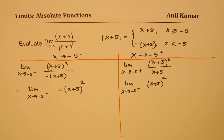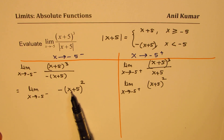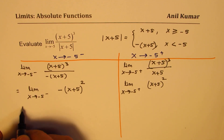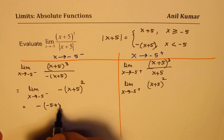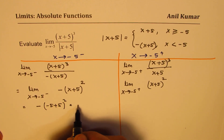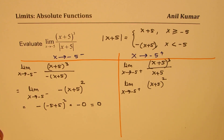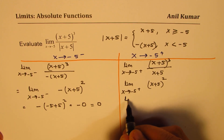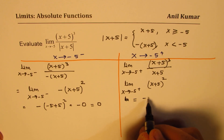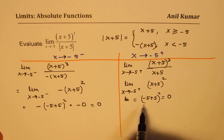Substituting x equals minus 5 on the left side: negative of (minus 5 + 5)² equals negative 0, which is 0. On the right side, substituting minus 5: (minus 5 + 5)² equals 0.